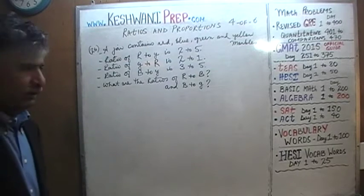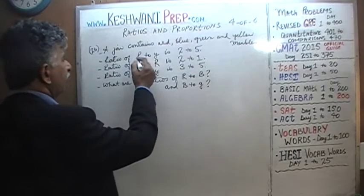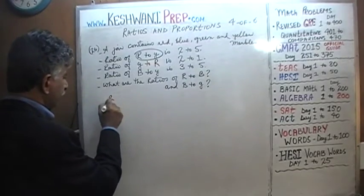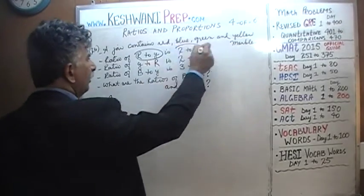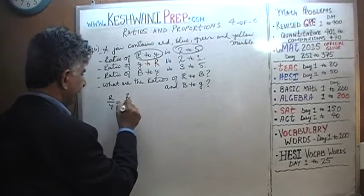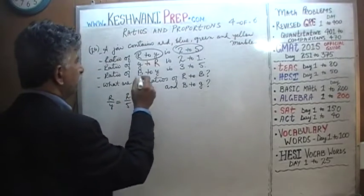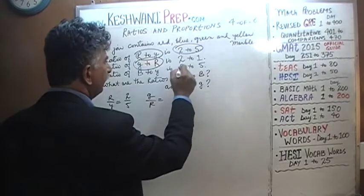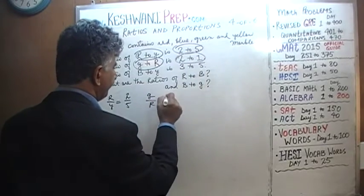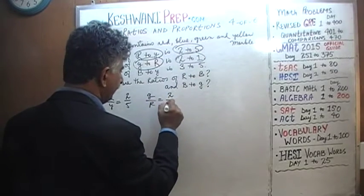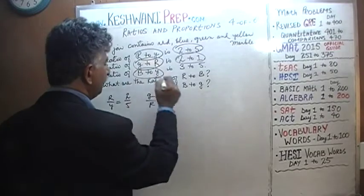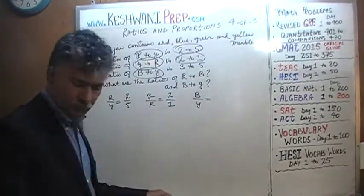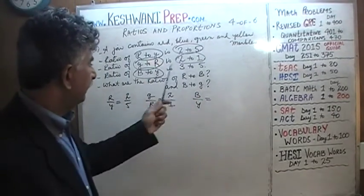Let's begin. We know the ratio of red to yellow is 2 to 5. We furthermore know that green to red is 2 to 1. And finally, blue to yellow is 3 to 5.